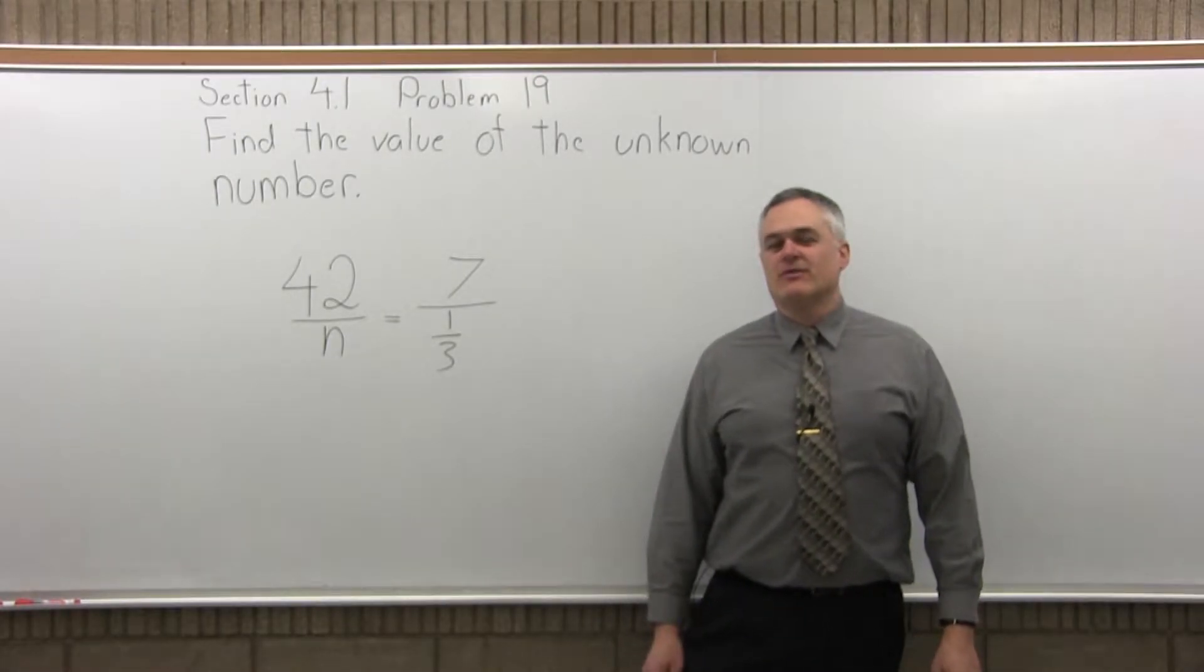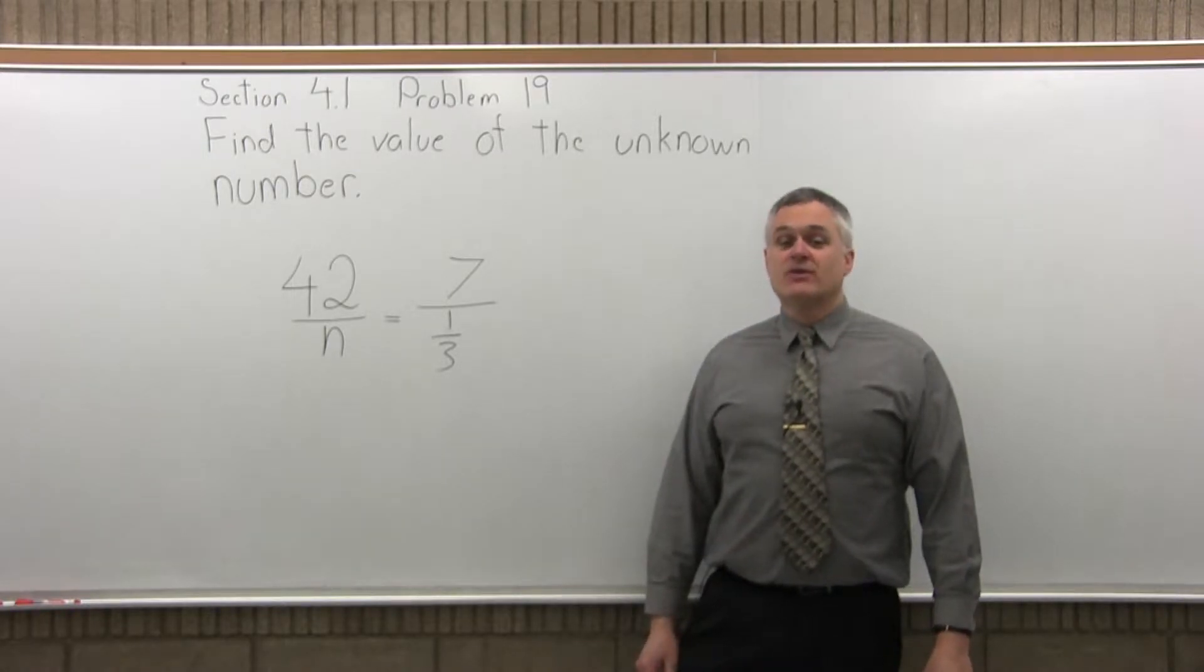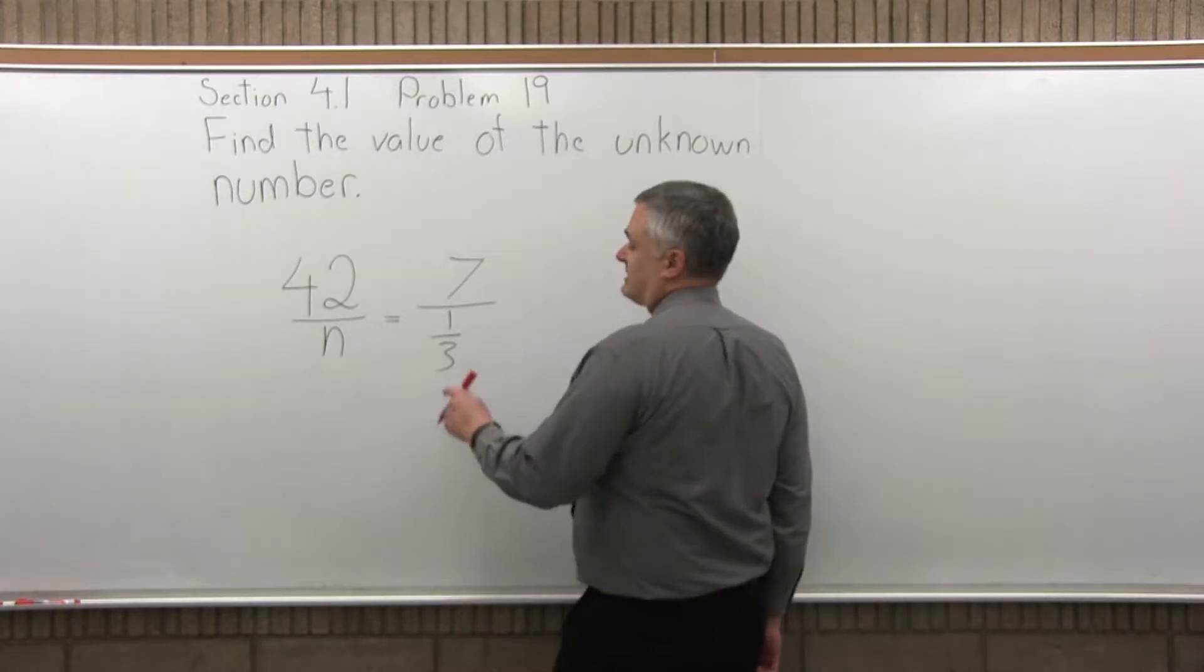Find the value of the unknown number. We have 42 over n equals 7 over one-third. So we have a fraction, but the process is the same as the others.